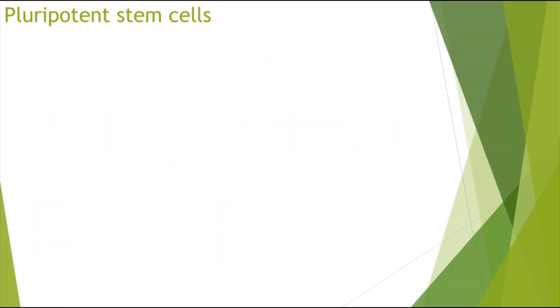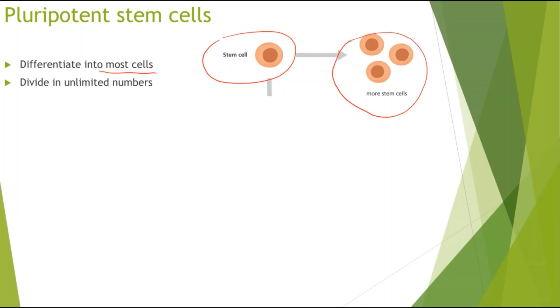Alright, so now looking at the pluripotent stem cells. So these pluripotent stem cells can differentiate into most cells, so they can differentiate into all body cells and there's just a few exceptions they can't differentiate into, so for example the cells in the placenta. Now they can divide in unlimited numbers, so you might have a stem cells and it'll just continue to divide and keep dividing. It's not really like the totipotent stem cells which will end up differentiating really quickly. And these again are found in the embryos, so totipotent stem cells are found in the very early stages of the embryo, but they can be found in the later stages of the embryo.